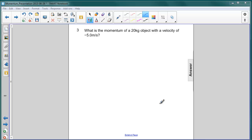In this next question, you're asked to find the momentum of a 20 kilogram object with a velocity of negative 5 meters per second.